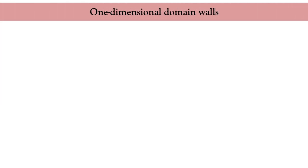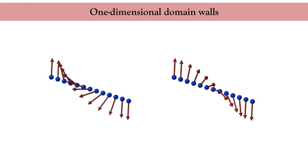What happens between two homogeneous magnetic domains? The simplest domain wall structures are shown here. On the left, you have the Bloch wall, where the magnetization in the center of the wall points perpendicular to the direction of the wall. On the right, you have the Néel wall, where the magnetization in the center of the wall points along the direction of the wall.